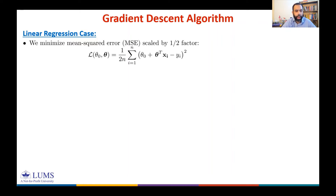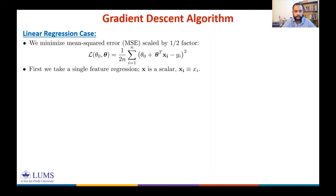We have this loss function for linear regression. First, we consider single-feature regression to understand the concept. We assume the input is a scalar — each xᵢ is a scalar — so for this case we only have two unknown coefficients.